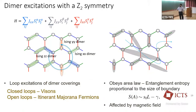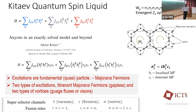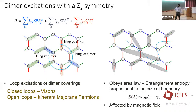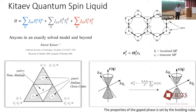The excitations of this model are fundamental quasi-particles: Majorana fermions. There are two types — the itinerant Majorana fermions, which are gapless, and the vortices or fluxes, which are gapped. These are the fusion rules you get. I think of it as: you get vortices from breaking Ising dimers in loops. When loops are joined you get fluxes; when you cut that loop with scissors, you get two Majorana fermions that can travel anywhere. Closed loops are visons and open loops are Majorana fermions.